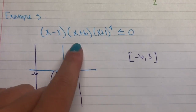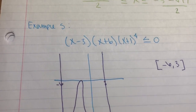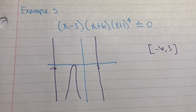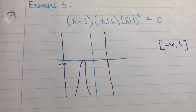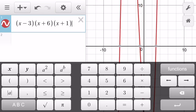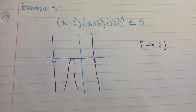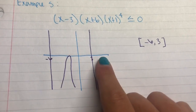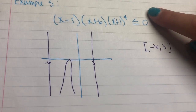For example 5, we have (x − 3)(x + 6)(x + 1)⁴ ≥ 0. We can plug this into Desmos or a graphing calculator. From the graph, the key x-values are negative 6 and 3. We disregard the root at x = −1 because the graph does not completely cross the x-axis there. Since the inequality uses ≥, we have a closed interval.